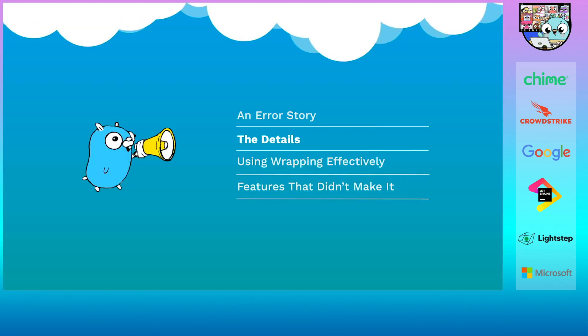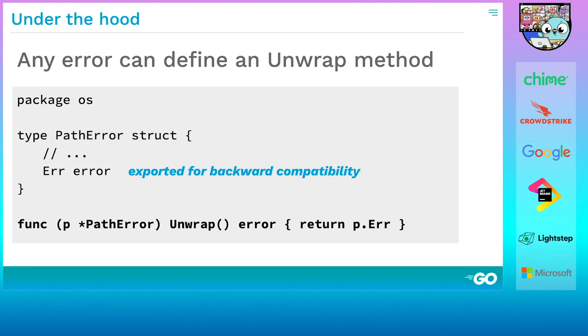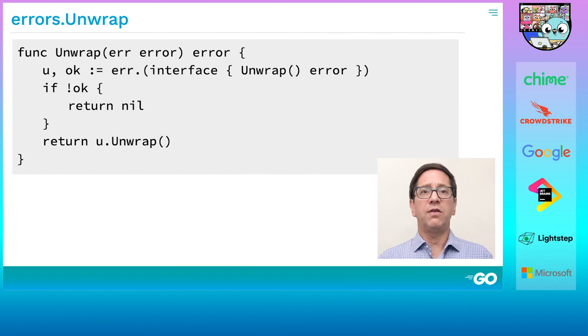Now that you've had a taste of it, let's dive into the details of error wrapping. At its heart is the unwrap method. It implements the error chain by returning the next error in the linked list, or nil if you're at the end. Here we see the actual code for the OS package's path error type. Path error was wrapping errors before wrapping was a thing. It just did it by having an exported field called error. To fit into the Go 1.13 wrapping framework, it now has an unwrap method that returns that field. The field no longer needs to be exported, and ideally it wouldn't be, but thanks to the Go 1 compatibility promise, we can't unexport it.